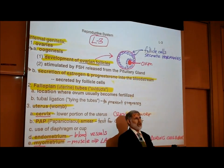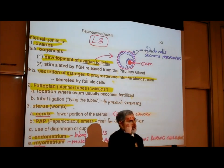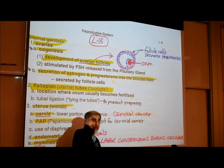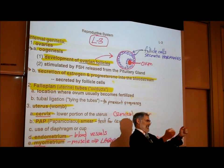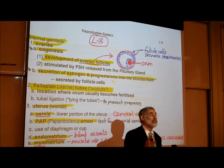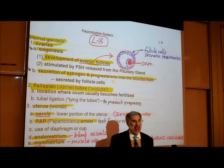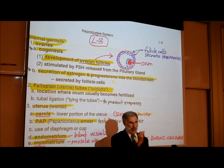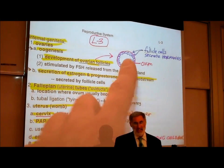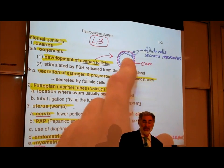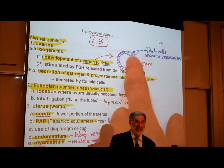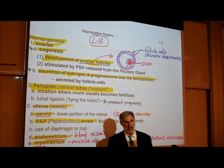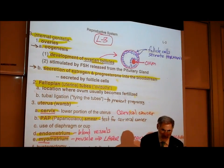It's actually those follicle cells surrounding the egg that secrete the hormones. When we say a woman's ovaries secrete estrogen and progesterone, everything is explained at the cellular level — it's actually these follicle cells that secrete the estrogen and progesterone.